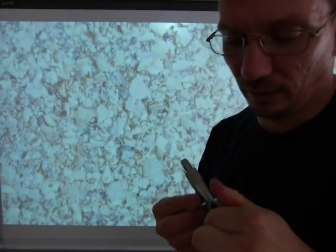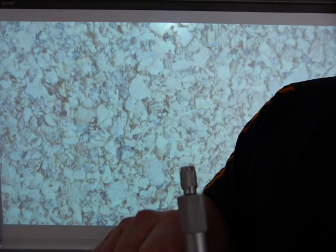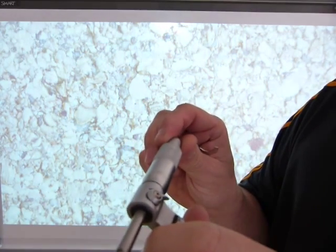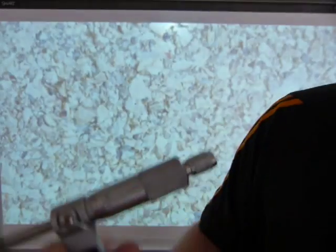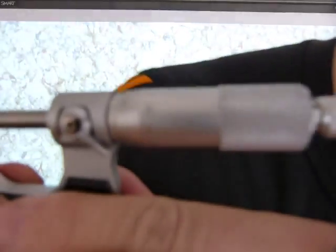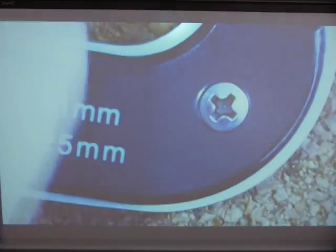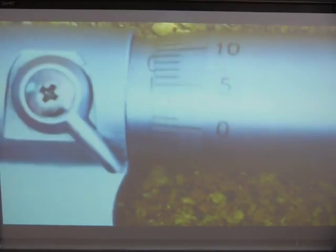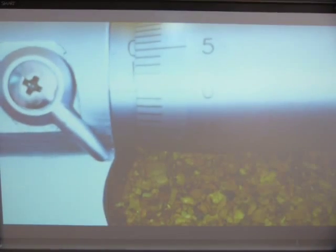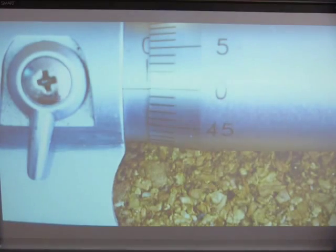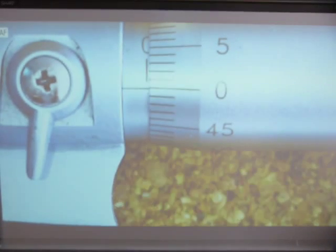There, those zero lines now line up a lot better than previously. Maybe just half a hair. Half a hair is a unit of measurement. Okay, that's pretty good, that's deadly. Here, take a look. The two zero hairlines line up. I'm going to put it under the elbow. There, it's not going to roll away.